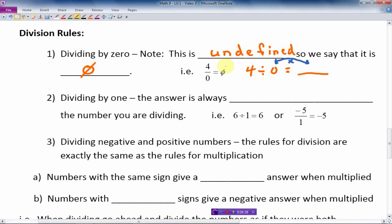Now dividing by 1, the answer is always the same as the number you're dividing. So 6 divided by 1 is 6. Negative 5 divided by 1 is negative 5. The sign doesn't change. It all stays the same like that.